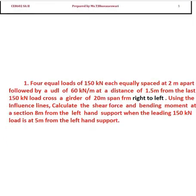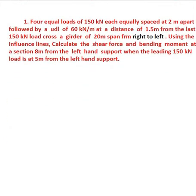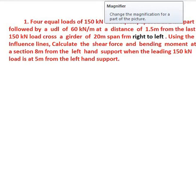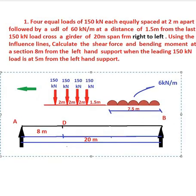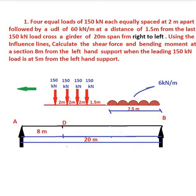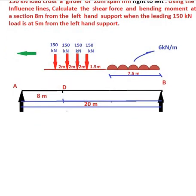Let us draw the sketch of the beam of 20 meter span. Here we can see the image of the girder of 20 meter span. Point D represents the section 8 meter from the left hand support. The green arrow represents the traverse of load from right to left. This is the load setup which is given in the problem. We are asked to find the maximum bending moment and shear force.